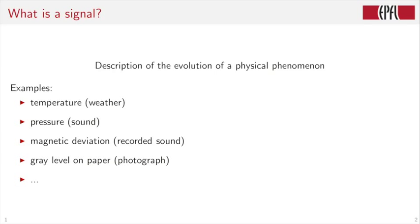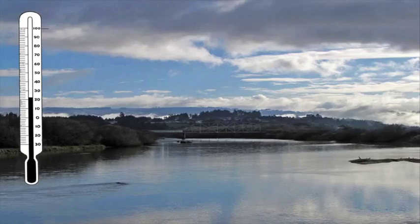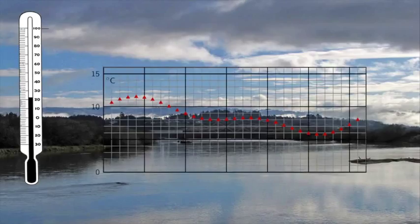Other examples are the temperature evolution over time, the magnetic deviation, for example on a LP recording, the gray level on paper for a black and white photograph, the flickering colors on a TV screen. Here we have a thermometer recording temperature over time. So you see how it changes over time.